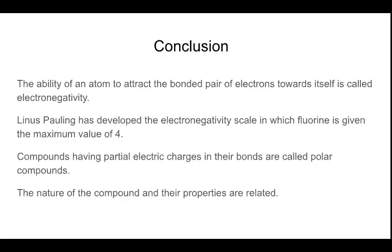In conclusion, the ability of an atom to attract the bonded pair of electrons towards itself is known as electronegativity. Linus Pauling developed the electronegativity scale in which fluorine is given the maximum value of 4. Compounds having partial electric charges in their bonds are called polar compounds.